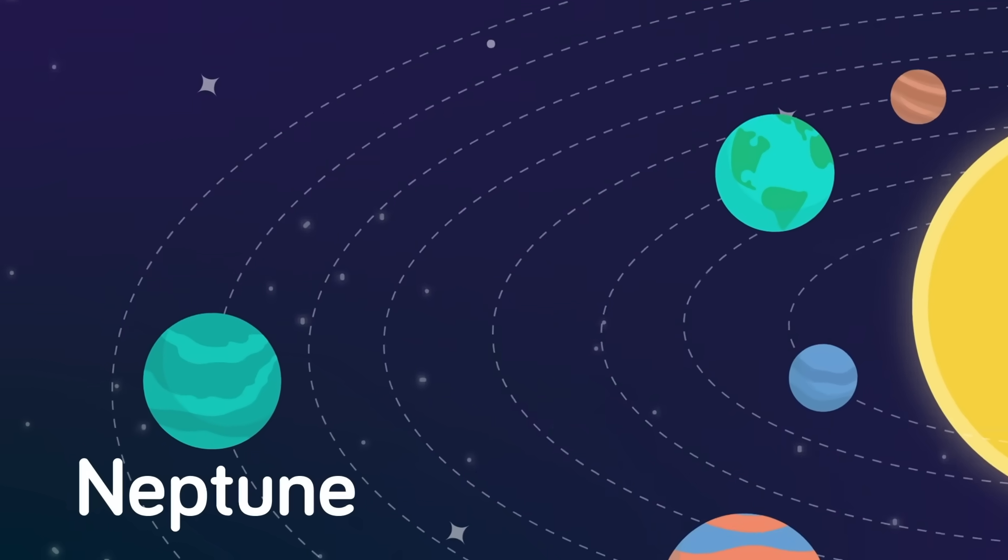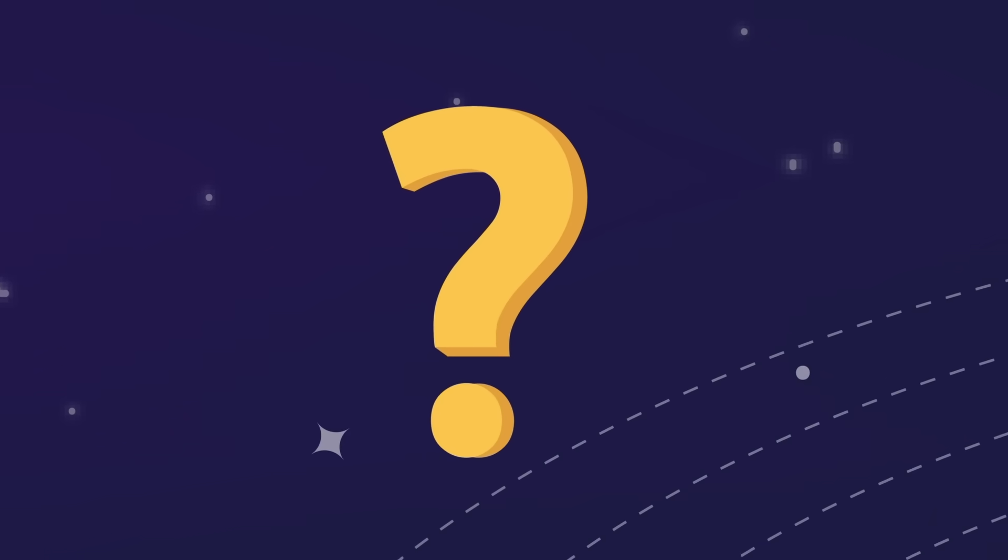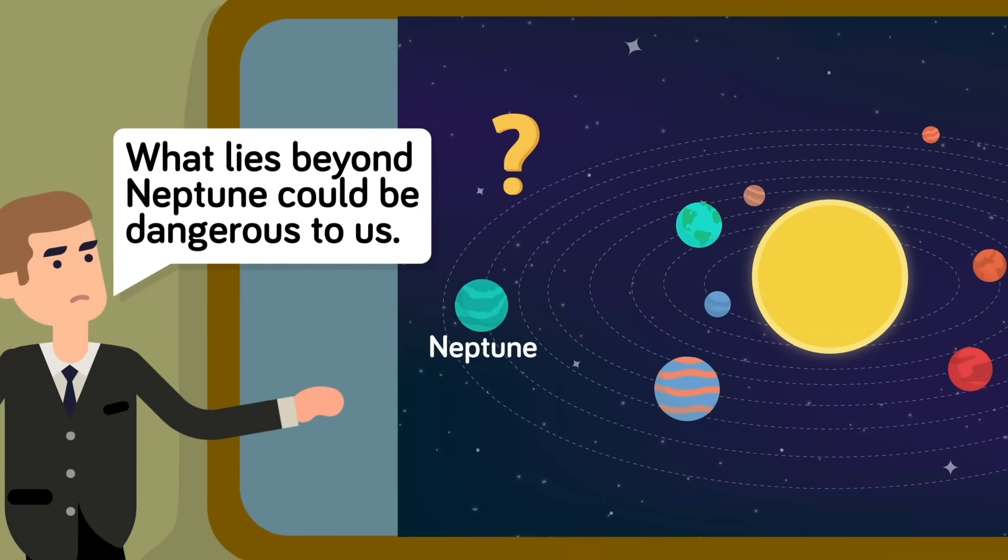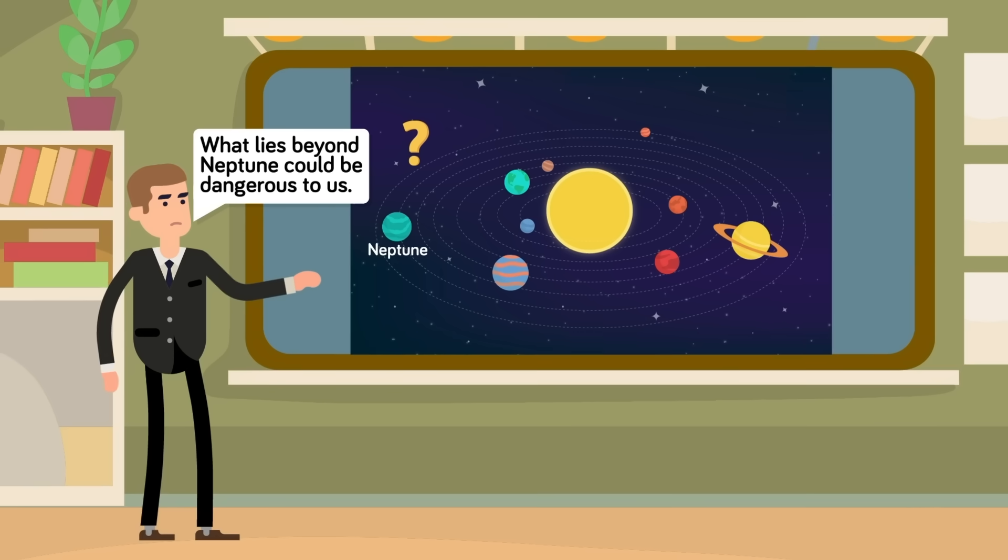So we have no clue what dark matter actually is, but a chunk of it sitting out in orbit past Neptune somewhere could explain what's going on with the outermost parts of the solar system. How will this affect the Earth, and us as we expand into space, is a complete unknown.